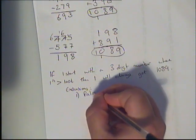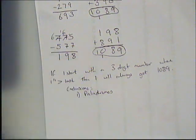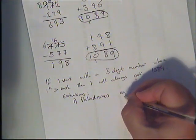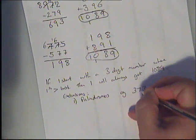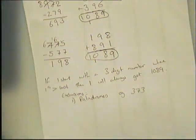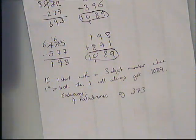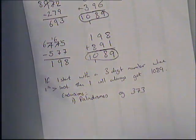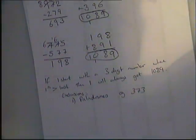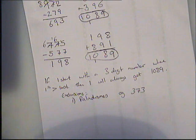Exclusion one: palindromes. A palindrome is a number that's the same forwards and backwards, for example 373, because the first digit isn't bigger than the last digit — they're the same — so they'd just cancel out. That works for all the digits being the same too, as they'd just cancel out massively.